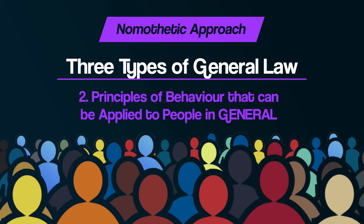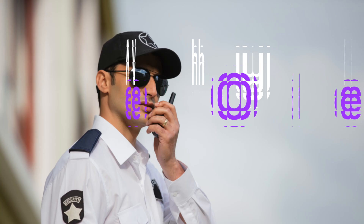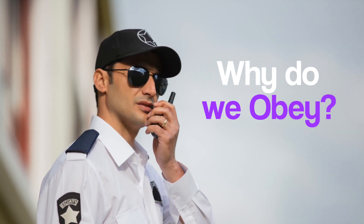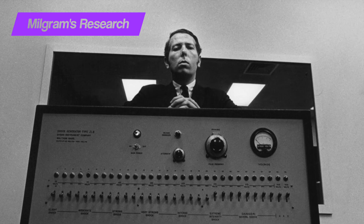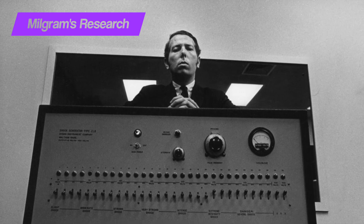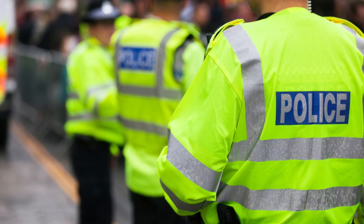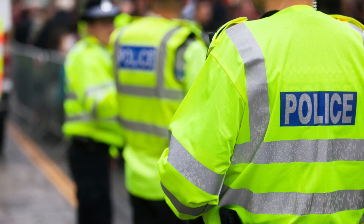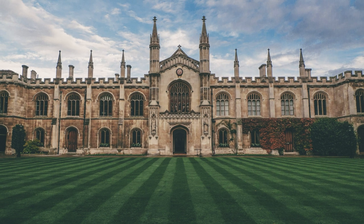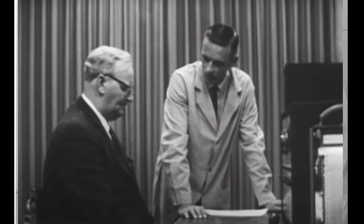Number two: principles of behaviour that can be applied to people in general. For example, consider research into why people obey authority figures. Milgram's research proposes that people are more likely to obey an authority figure if they are wearing a uniform, are in a more prestigious location, and are in closer proximity.